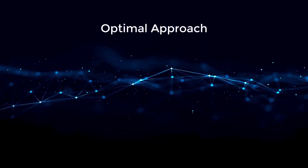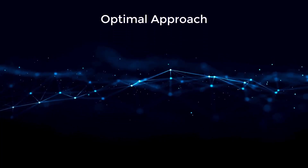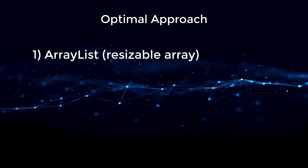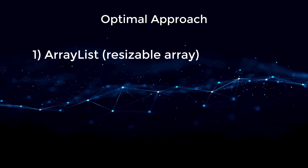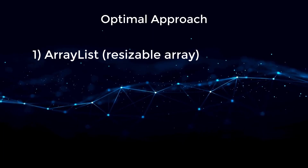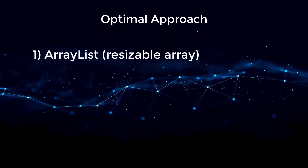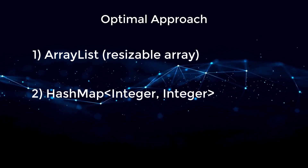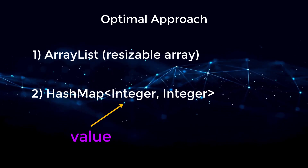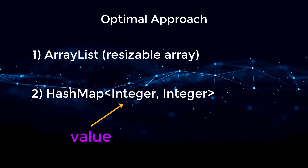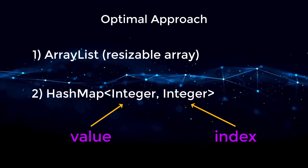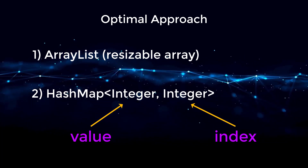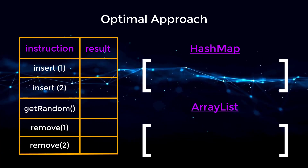Now let's go over the optimal approach. We're going to need two different data structures. The first is an array list — a resizable array — which will keep track of all current elements in our set and allow us to select an element at random in constant time. The second data structure is a hash map that maps integers to integers, where the keys are the actual values being inserted or removed, and the value is the index of that value in our list.